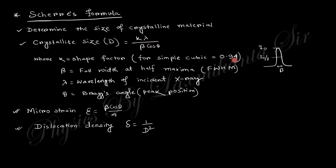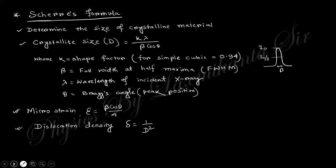Full width at half maximum means: this is the peak height, and at half that height, what is the width in 2θ? From this relation you get the grain size — the crystalline size of the material. Micro-strain can also be obtained from this relation, and dislocation density can be obtained. These are the applications of XRD.